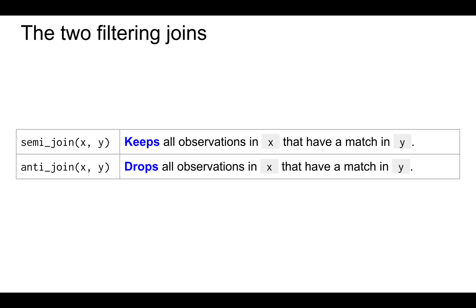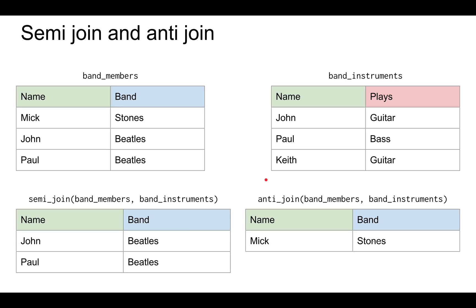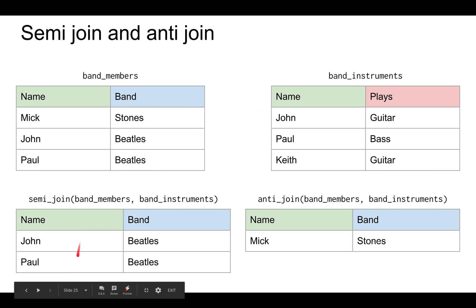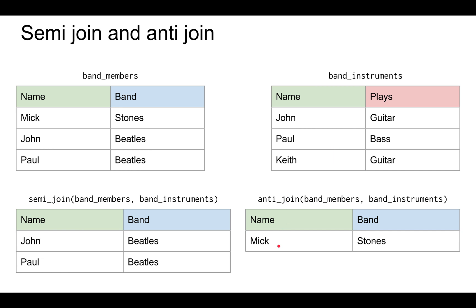Now let's talk about the two filtering joins. A semi join keeps all observations that have a match in y, whereas an anti join drops all observations that have a match in y. For example, a semi join of band members and band instruments will keep John and Paul because these two members match in band instruments. Whereas an anti join keeps Mick because Mick does not match in band instruments.